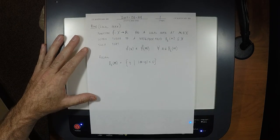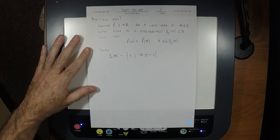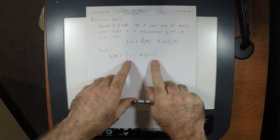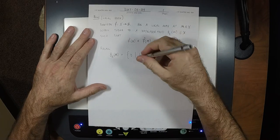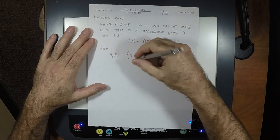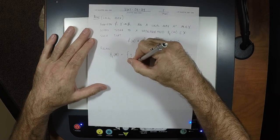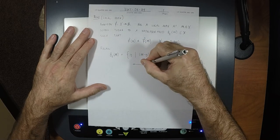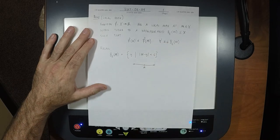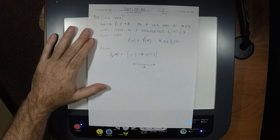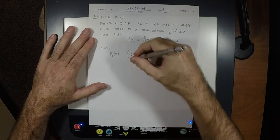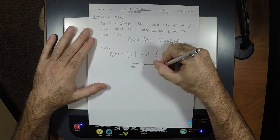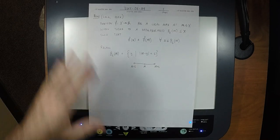What does this mean? It means we're talking about an open interval: from M minus epsilon on the left to M plus epsilon on the right, with point M in the middle. So a point M is said to be a local max when all of these conditions hold.